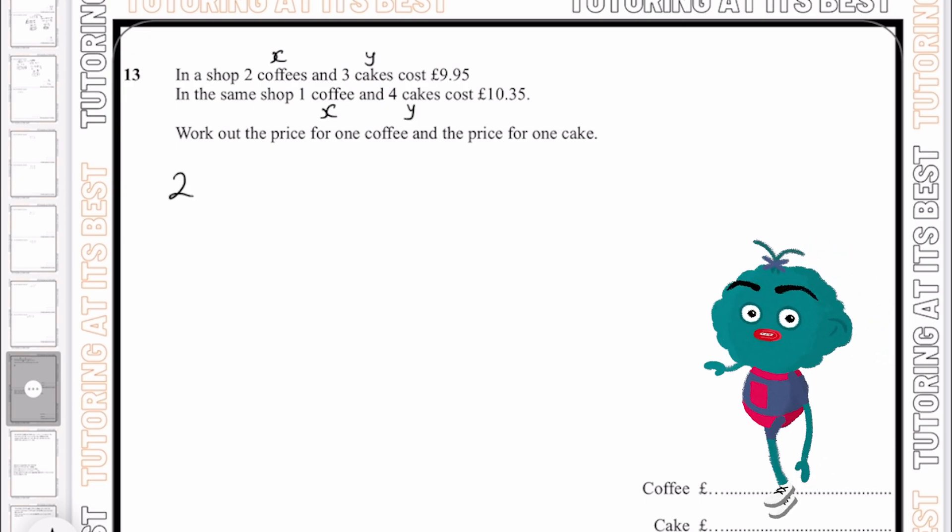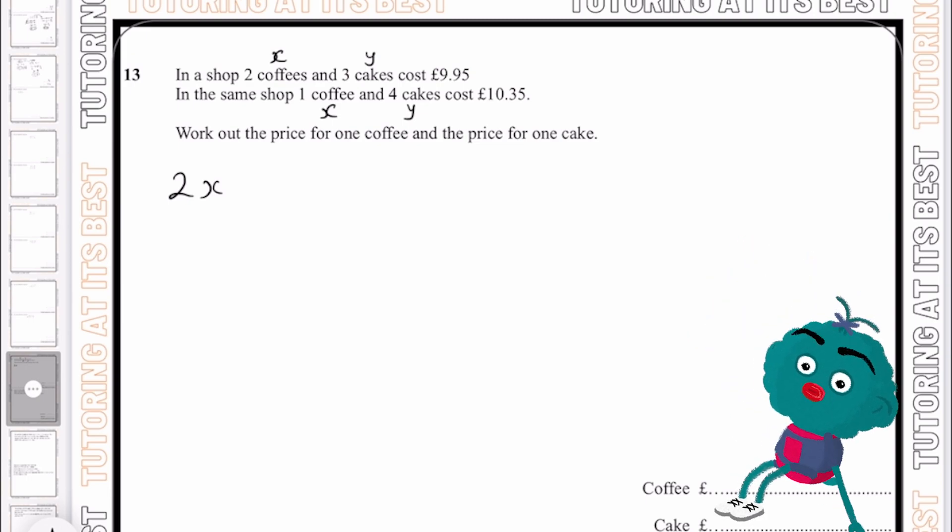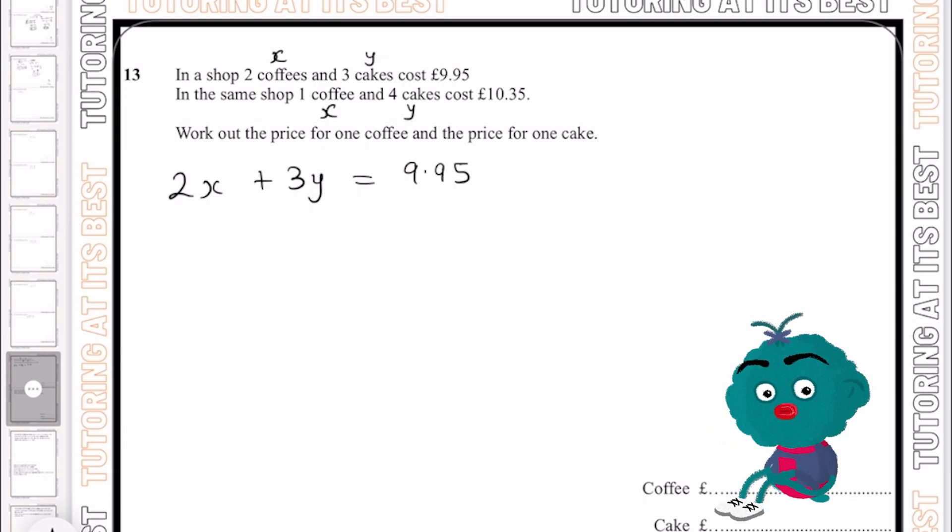So we'll have 2x, which represents two coffees, and 3y, which represents three cakes, which equal £9.95. And I'm going to do that for the second equation, which is one coffee, which is going to be seen as x, plus four cakes, and that's going to be 4y, which then equals £10.35.